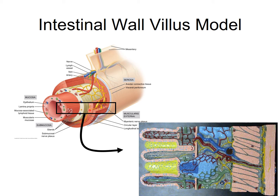Looking at the model: mucosa, submucosa, muscularis externa, and then there would be a thin layer of the serosa on the outside. Let's go back to the mucosa. The lumen is here, and here's our mucosa, which is thrown into those finger-like projections called villi. Some of those villi are dissected so you can see the blood capillaries where nutrients are absorbed. Others are dissected so that you can see the lymph capillaries, which are called lacteals. That's what the green structure is. Fat is absorbed into the lymphatic system through these lacteals.